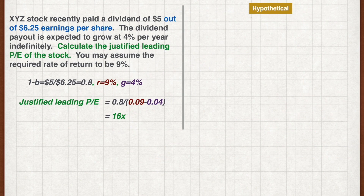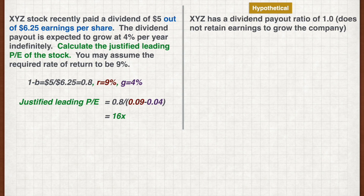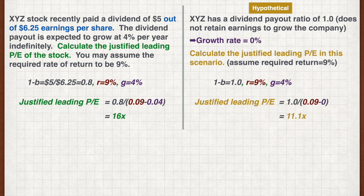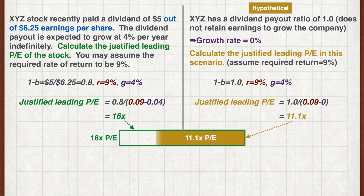Now let's explore a hypothetical scenario. Let's say XYZ has a dividend payout ratio of 1.0 — that is, it pays out all its earnings to shareholders, so it does not retain any of the earnings to grow the company. The growth rate can therefore be assumed to be 0. If we plug in the figures into the formula, we get a PE of 11.1. Comparing this with our earlier calculation of 16 times leading PE, we can interpret that the difference of 4.9 times PE is attributable to expected growth of the company.